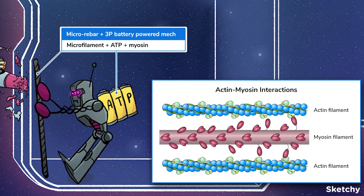The protein myosin can use energy from ATP to walk along actin strands in microfilaments. This interaction between actin, myosin, and ATP causes cells to contract. Most notably, this interaction causes muscle contractions.